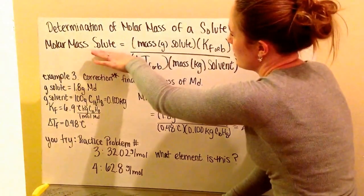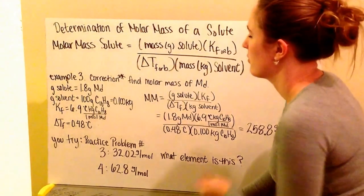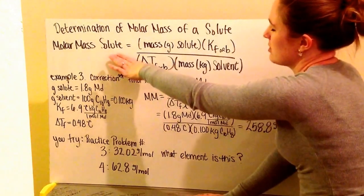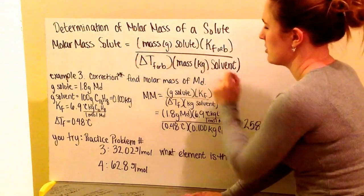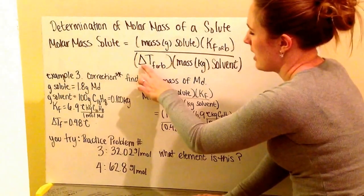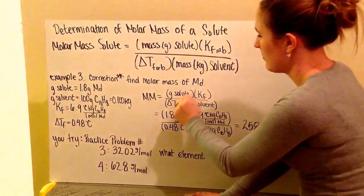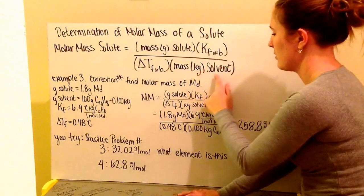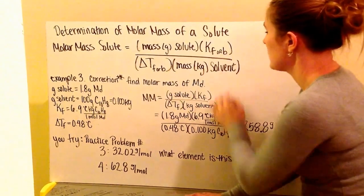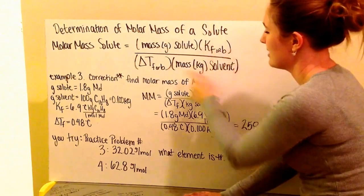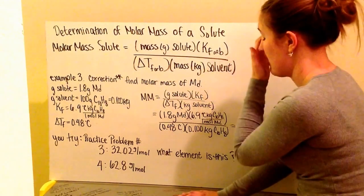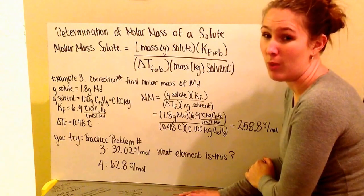Your molar mass of solute, if you're searching for it from raw data, equals the mass in grams of your solute times your Kf or Kb of that solvent divided by your change in temperature times the mass in kilograms of your solvent. The kilograms here is because the unit in your Kf is kilograms of water. Those units have to cancel out because you want to end up getting grams per mole, and that mole comes from your K value.